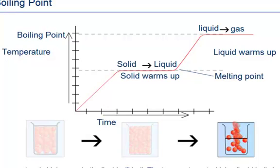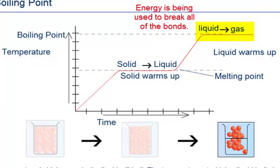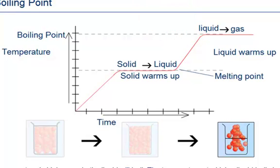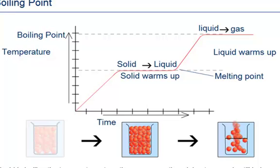When the temperature is high enough, the liquid will boil. The temperature at which a liquid boils is called its boiling point. Notice that there's another plateau — the energy is going to be used to break all the bonds this time, instead of raising the temperature. When the liquid is boiling, the temperature stays the same even though heat energy is still being supplied; this energy is being used to separate the liquid particles from each other.